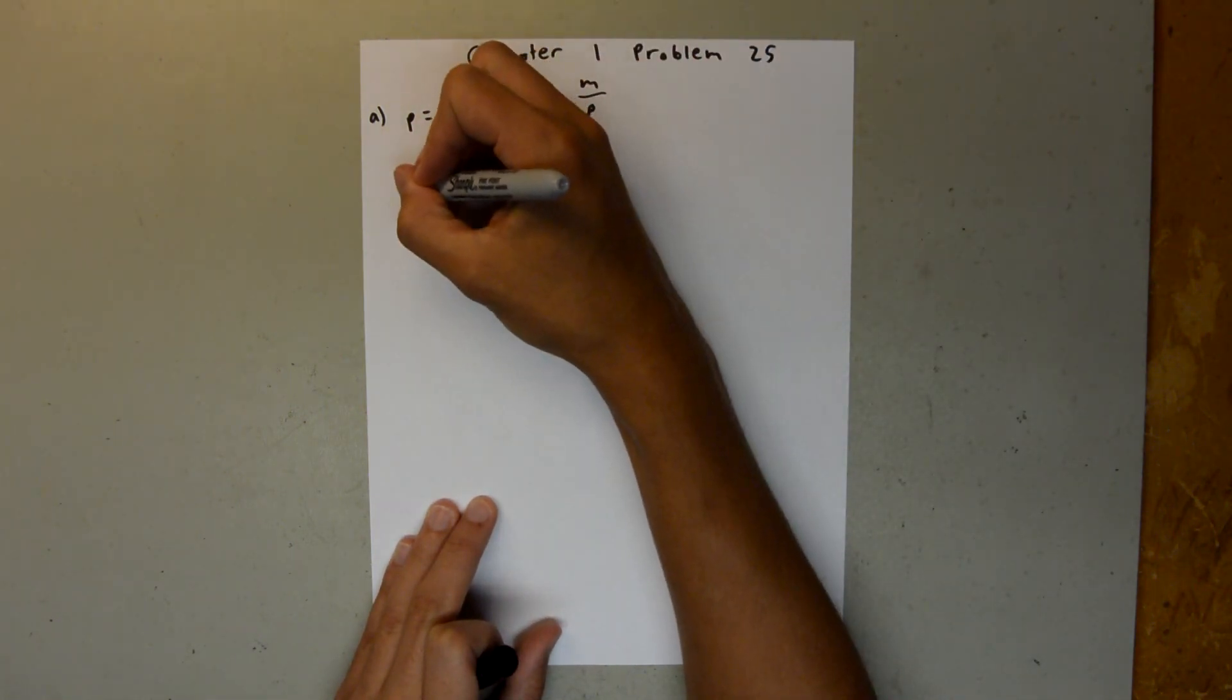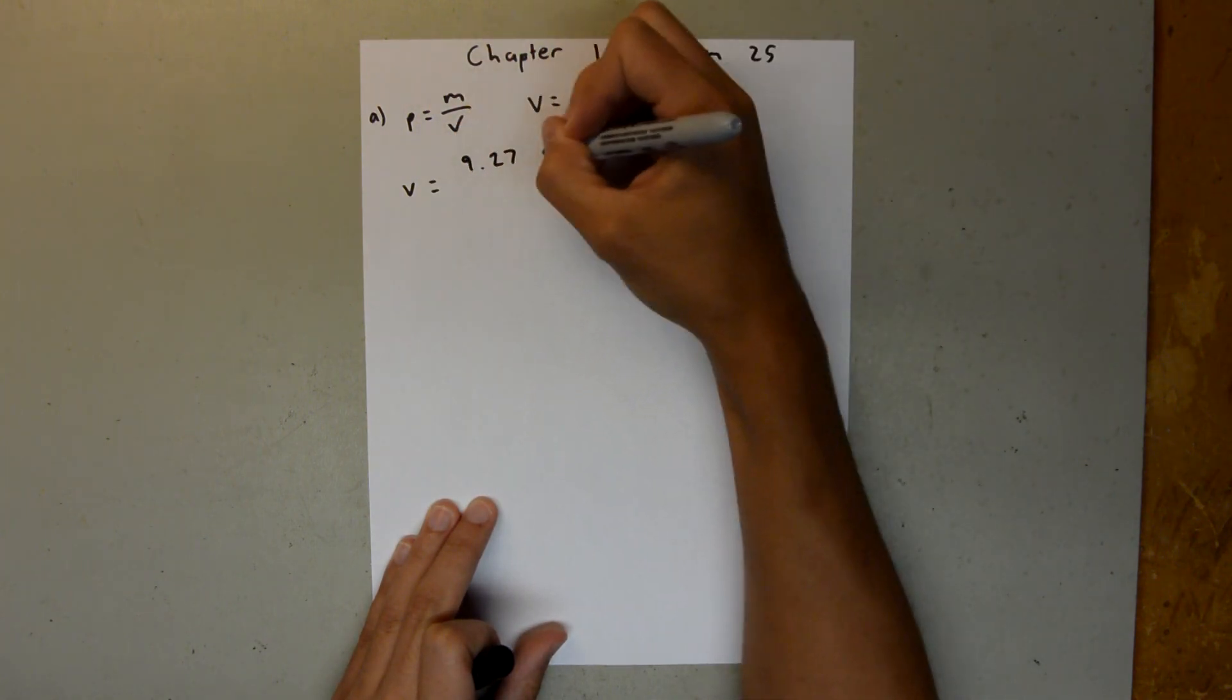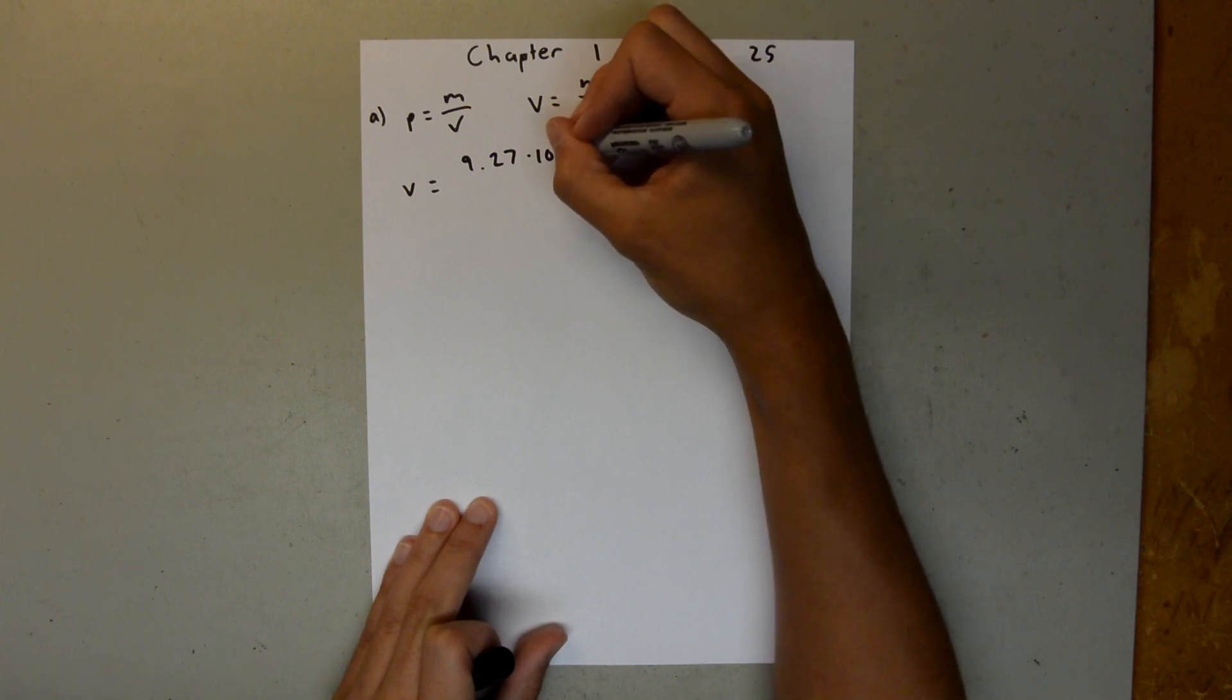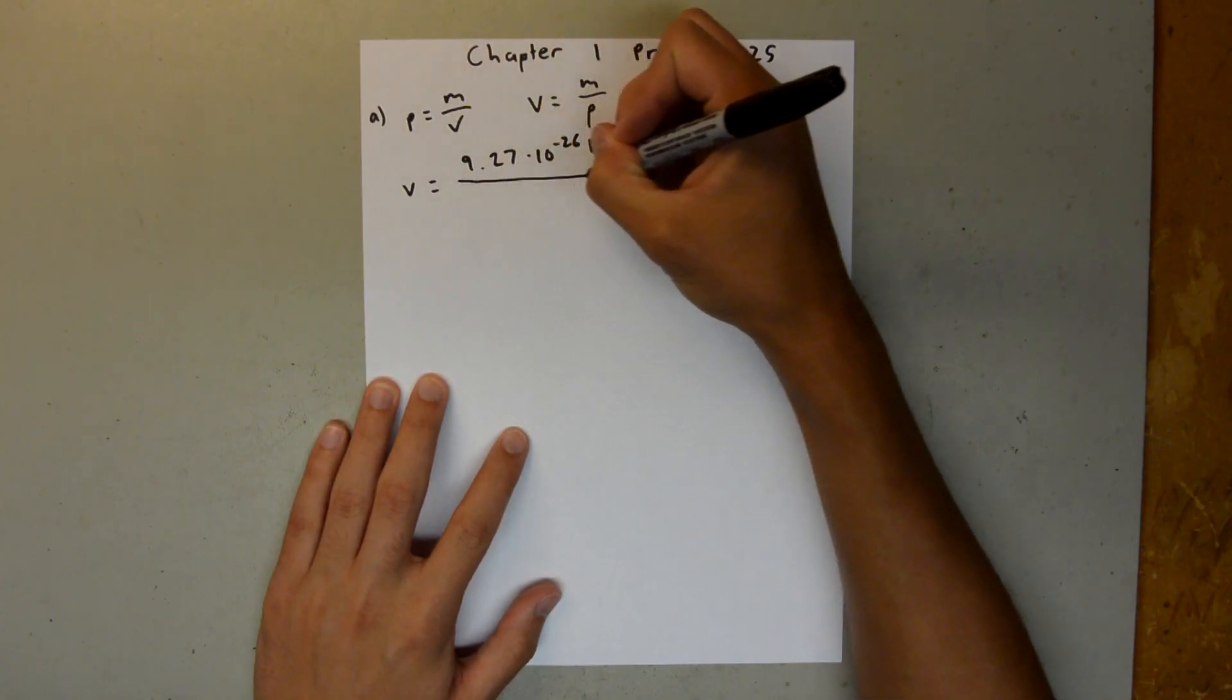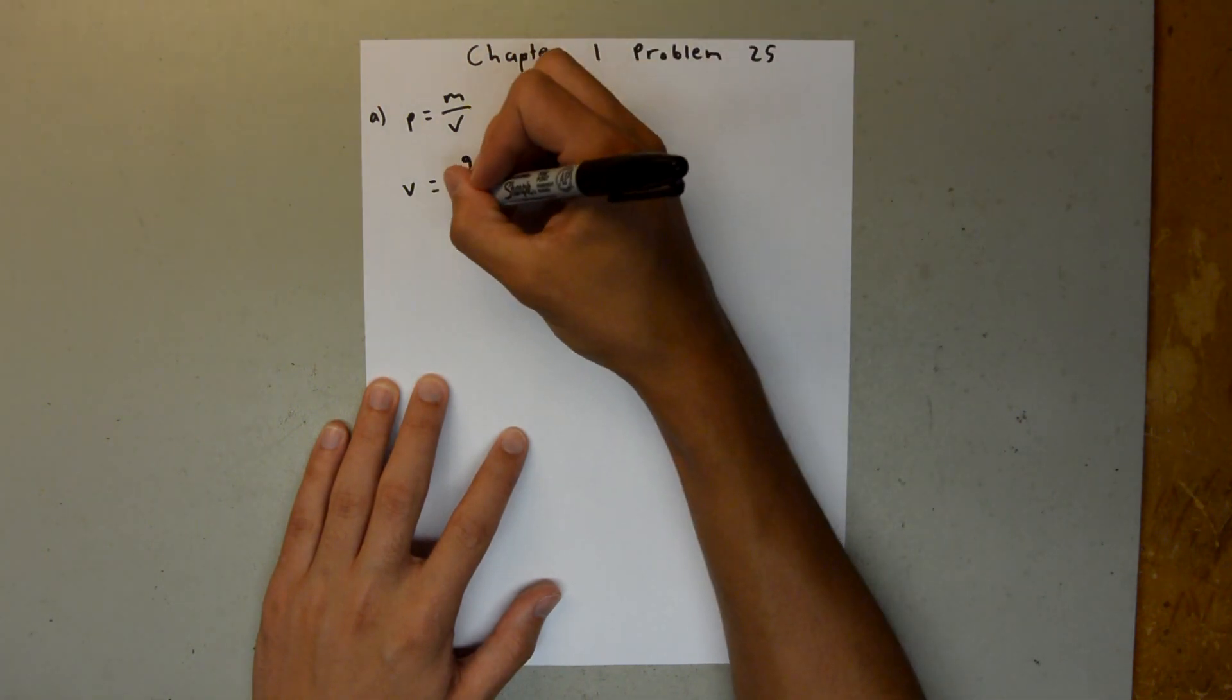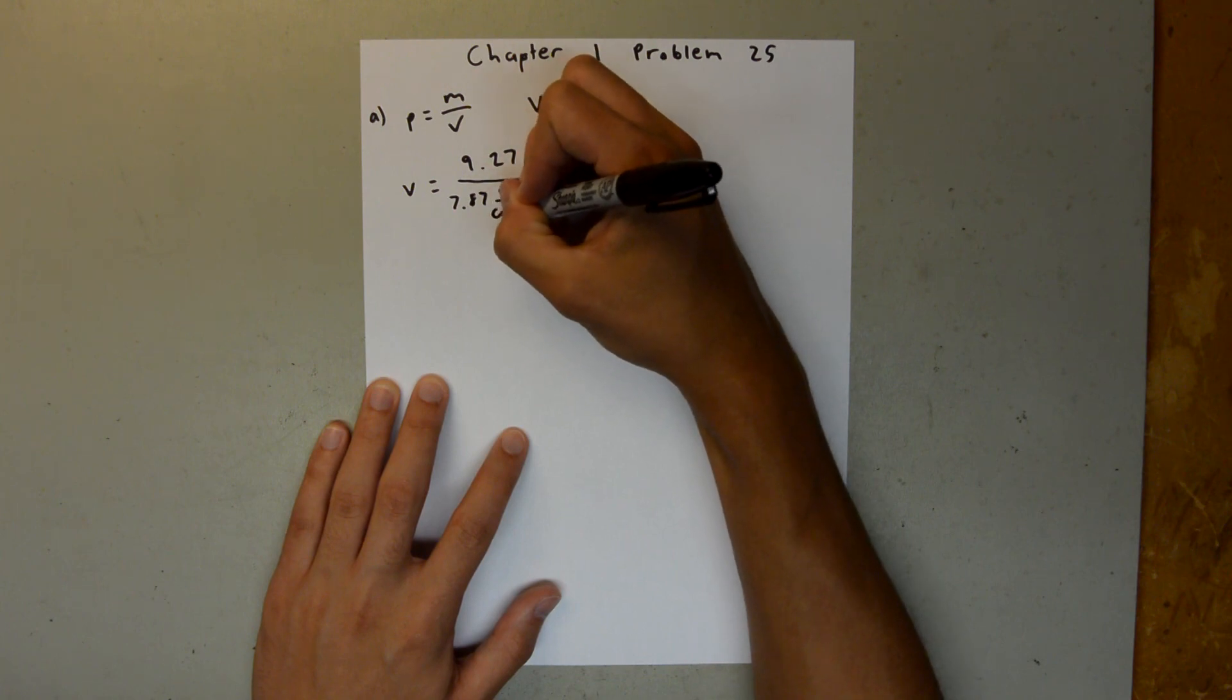So we can do volume is equal to 9.27 times 10 to the negative 26 kilograms, and we can divide that by the density, which is 7.87 grams per centimeter cubed.